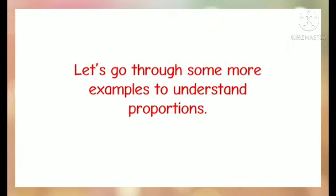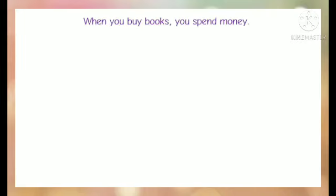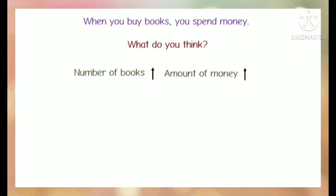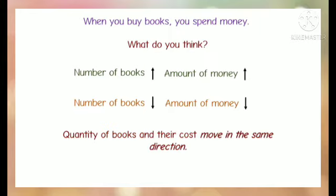Let's go through some more examples to understand proportions. When you buy books, you spend money. When the number of books increases, the amount of money spent increases. When the number of books decreases, the amount of money decreases. Quantity of books and their cost move in the same direction.